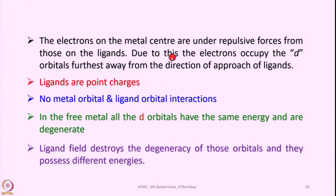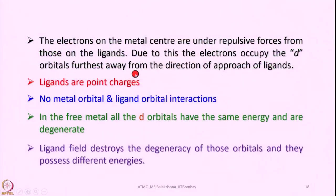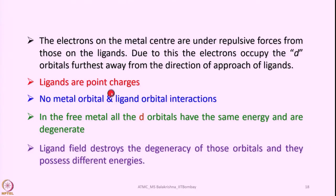The electrons on the metal center experience repulsive forces from those on the ligands. When the ligands approach the metal with a pair of electrons and electrons are already present in d orbitals, they experience a repulsive force. As a result, the electrons in the d orbitals will occupy positions furthest away from the direction of approach of the ligands. According to crystal field theory, ligands are treated as point charges and there is no metal–ligand orbital interaction.